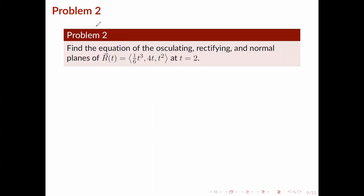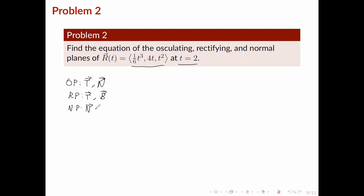Let's move on to problem 2. Problem 2 asks us to find the equation of the osculating, rectifying, and normal planes of r defined by a given vector-valued function at t equals 2. The osculating plane is the plane that contains the unit tangent vector and the unit normal vector. The rectifying plane contains the tangent vector and the binormal vector. The normal plane contains the normal vector and the binormal vector.